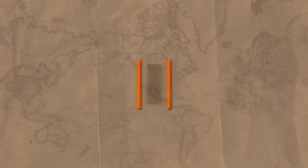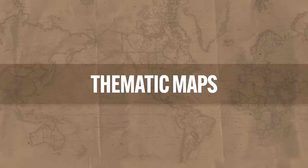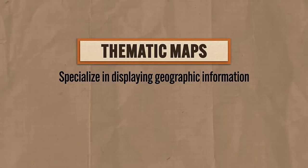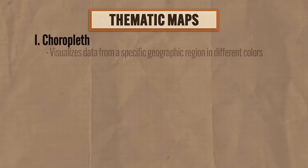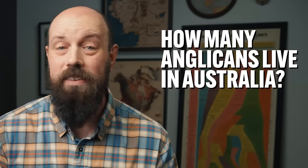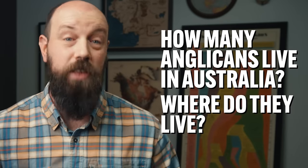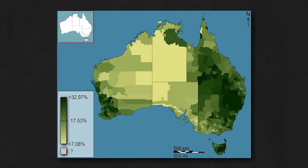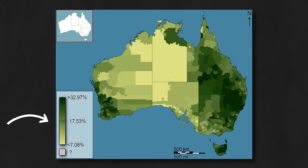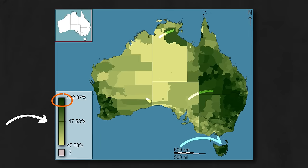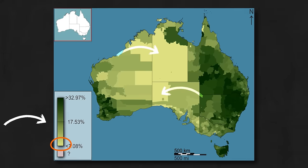The other category of map you need to know is thematic maps, and they specialize in displaying geographic information — not locations, information. Let me explain the difference by showing you the five kinds of thematic maps you're going to see over and over again in this course. First is the choropleth map, which visualizes data from a specific geographic region in different colors. So let's suppose the question keeping you up at night is how many Anglicans live in Australia and where do they live. A choropleth map like this can help you answer that. In order to interpret this, pay attention to the scale: the darker the green, the more Anglicans there are in a location, and the lighter the green, the fewer.